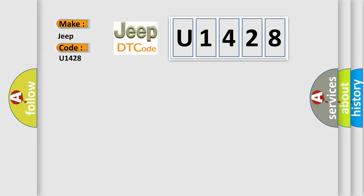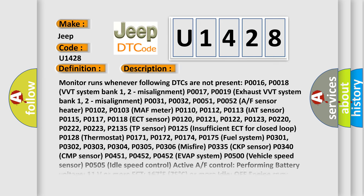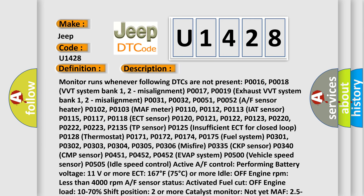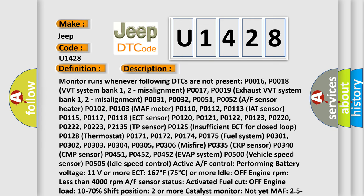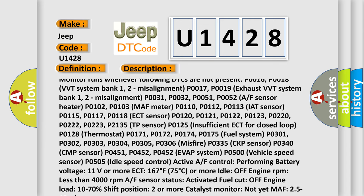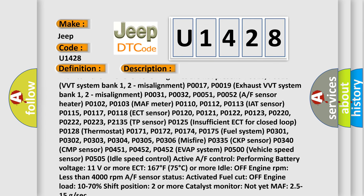The basic definition is: ORF Sensor Circuit Slow Response Bank 1 Sensor 1. The monitor runs whenever the following DTCs are not present: P0016, P0018 VVT System Bank 1 and 2 Misalignment; P0017, P0019 Exhaust VVT System Bank 1 and 2 Misalignment; P0031, P0032, P0051, P0052 AF Sensor Heater; P00102, P00103 Mass Airflow Meter; P0110.